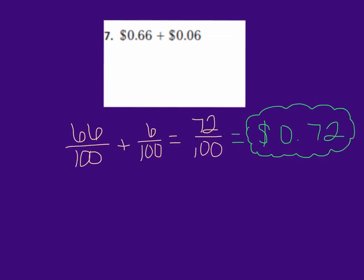Okay, let's check our work. 66 cents is equivalent to 66 hundredths, and 6 cents is equivalent to 6 hundredths. Now we have both fractions out of hundredths, which makes it easier to add. We can say 66 plus 6 gives me 72, and our denominator stays 100. Since we started with money form, our answer needs to be changed back into money form. So 72 hundredths is equivalent to 72 cents. I hope that you did an awesome job.